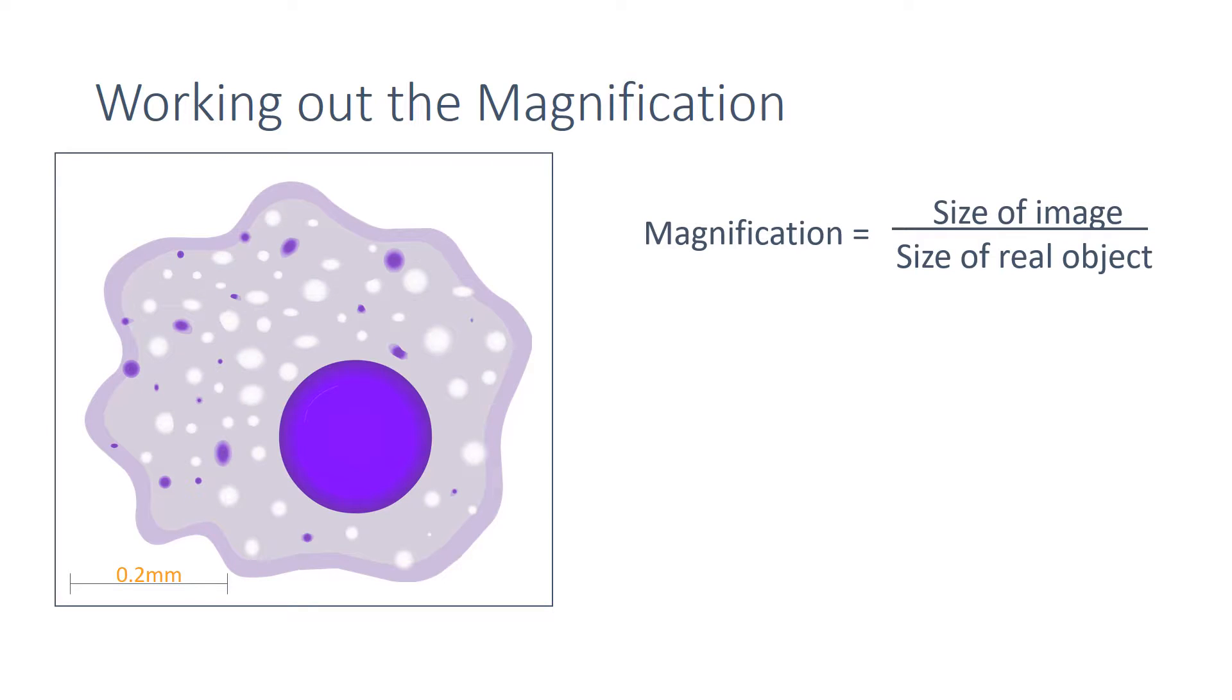In this diagram of the cell, there's a scale bar, and we can use this to work out the size of the real object, as it's labeled as 0.2 millimeters.